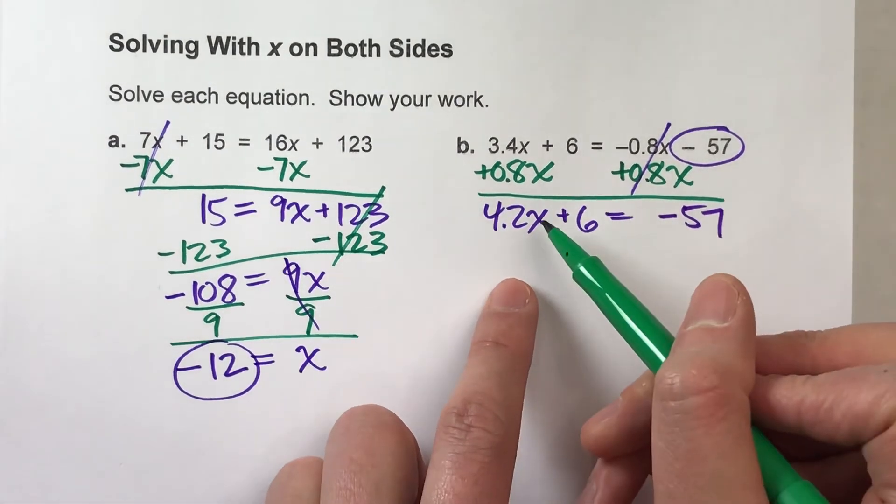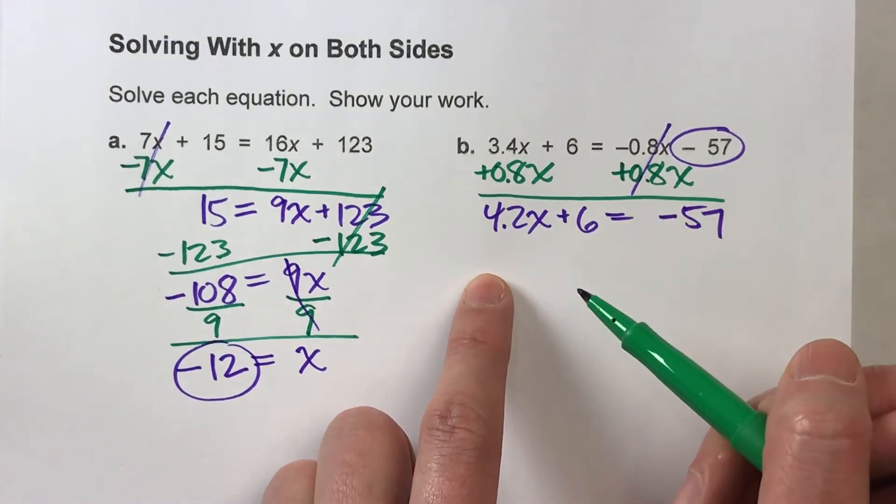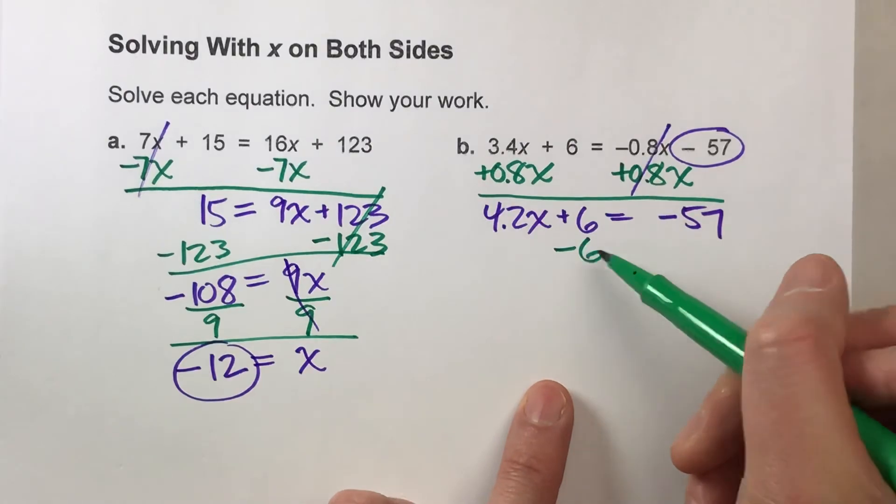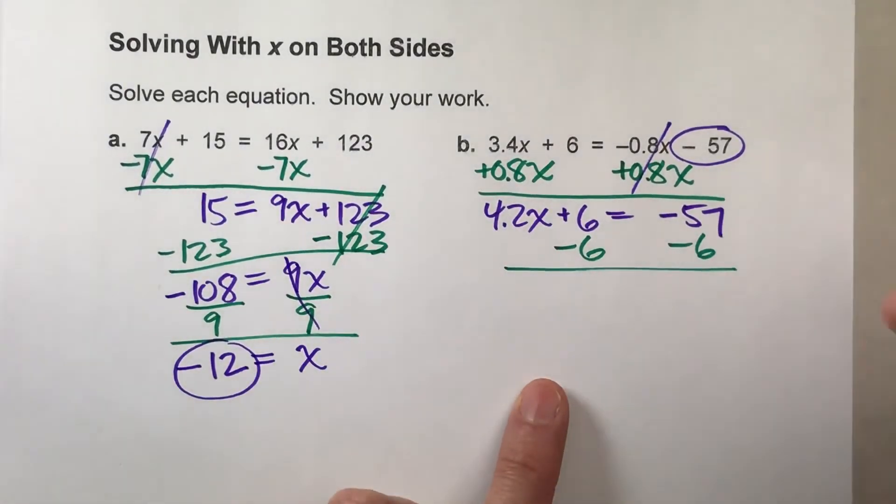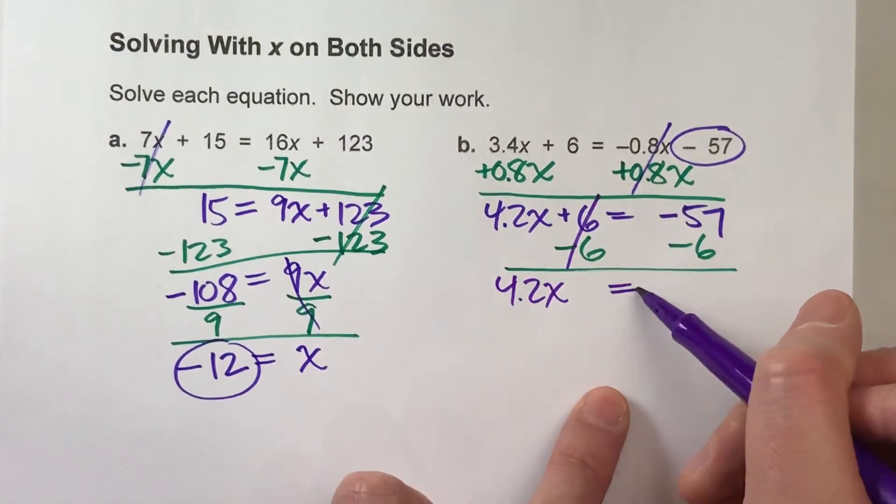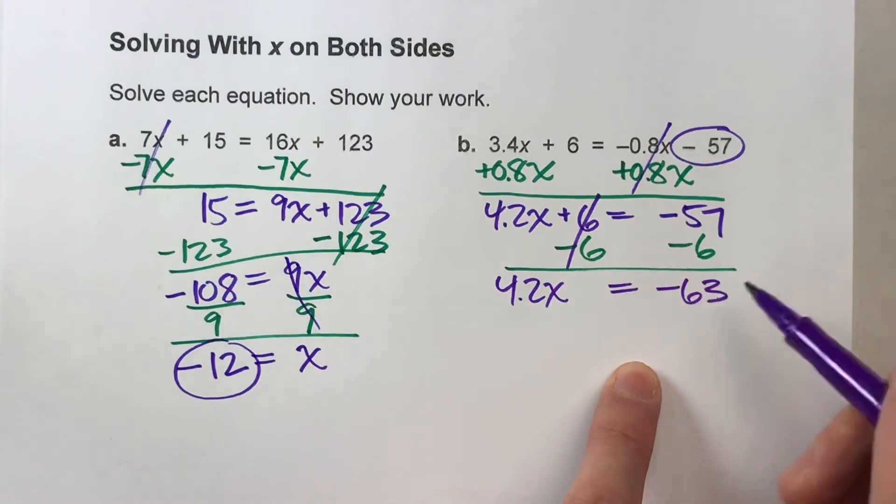Okay, we've got x's over here all by itself, so this is the side we're going to undo. Okay, so I'm going to start by undoing the plus 6, so I have to subtract 6 on both sides. The 6's undo each other, but the 4.2x drops down, equals drops down, and negative 57 minus 6 is negative 63.